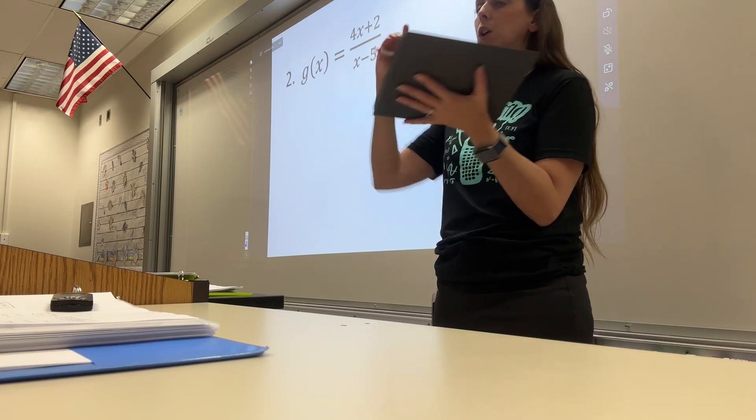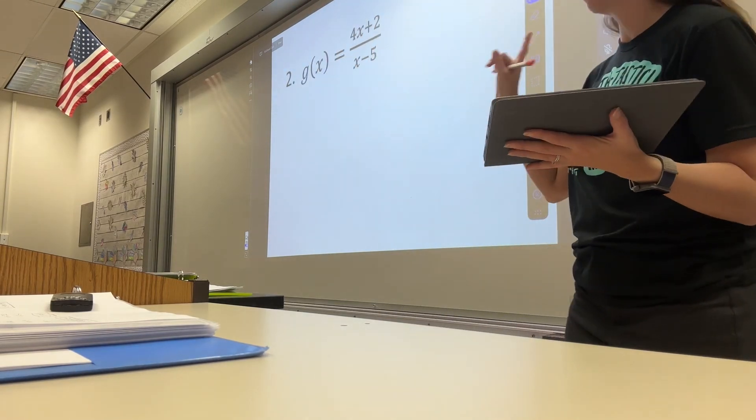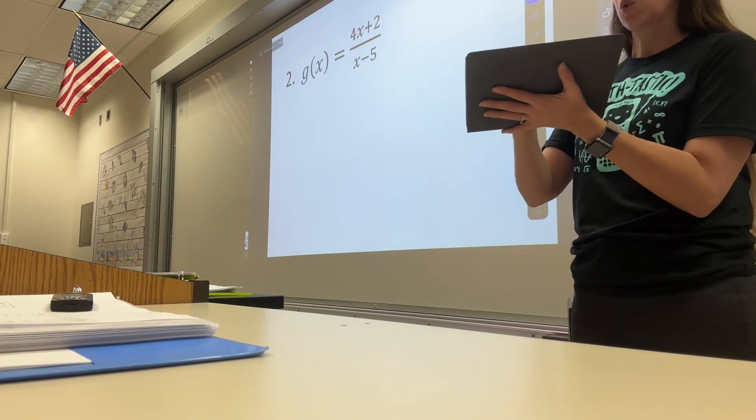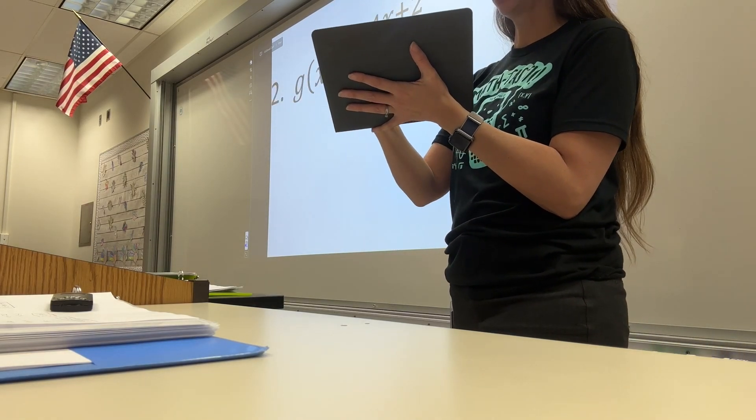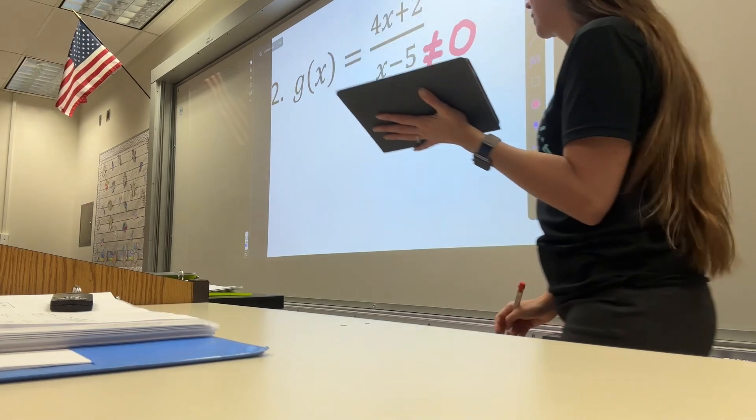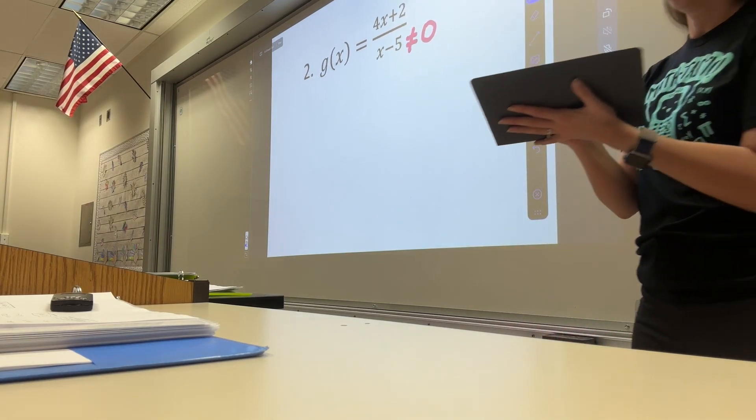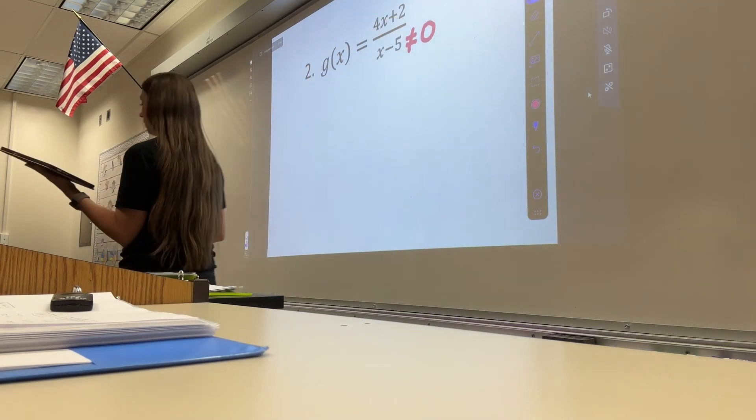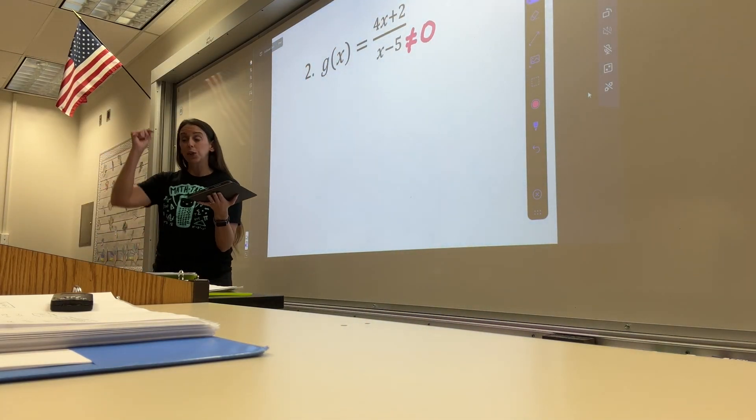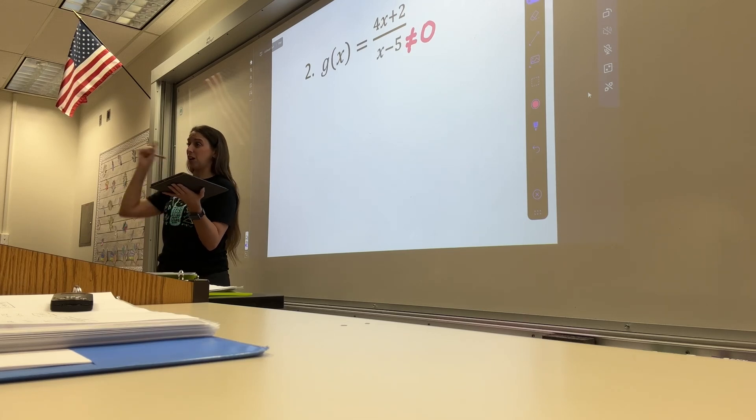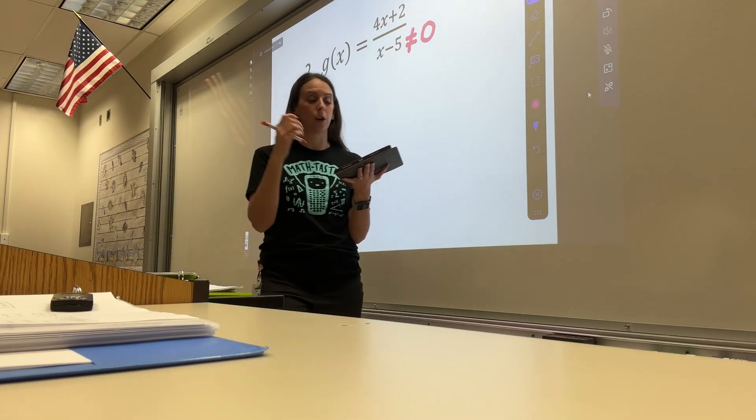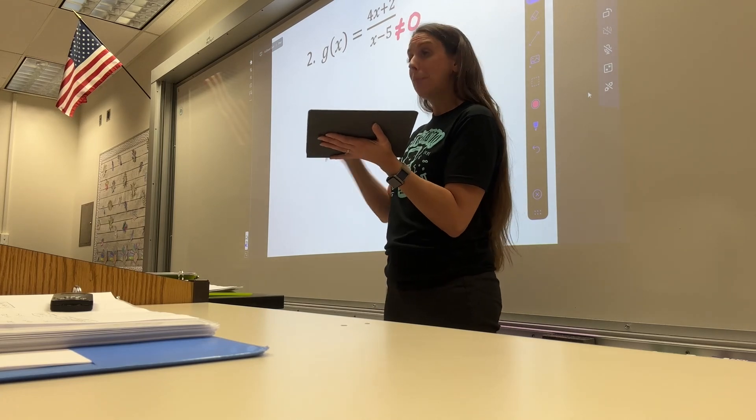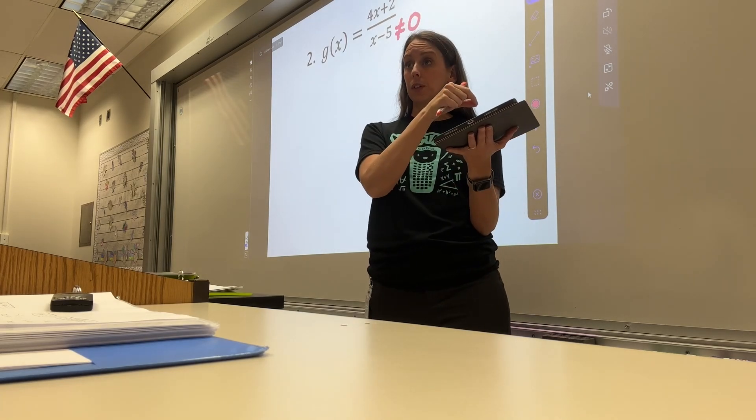All right, number two. Do we have a fraction? Yes. Okay, so now we have to do a little bit of extra work. So with our fraction, what can't equal zero? The denominator. So we are going to make a note right in our problem here that that cannot equal zero. Now, I realize for this first problem, it's fairly easy to solve in our head. However, when we try to solve things in our head, when they're really easy, we make really stupid mistakes. So we're not going to do this in our head. We're going to do it on paper.